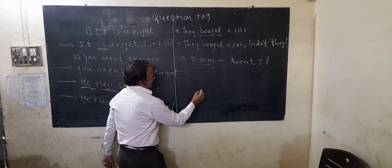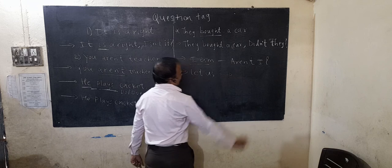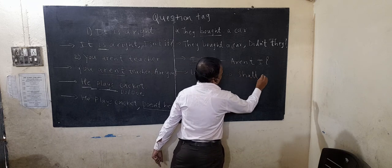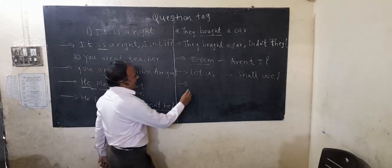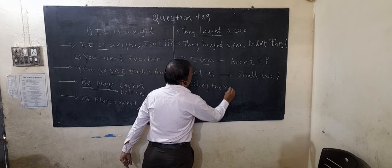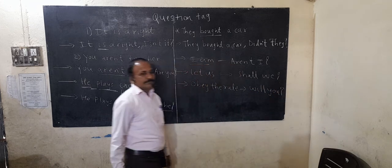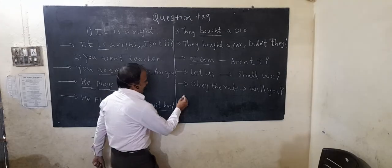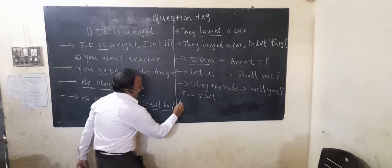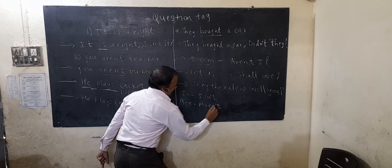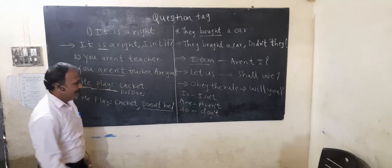Another rule: if the statement starts with 'let us', the question tag will be 'shall we?' If the statement is imperative — for example, 'Obey the rule' — the question tag will use 'will you?' The contractions used are: 'is' becomes 'isn't', 'are' becomes 'aren't', 'do' becomes 'don't'.